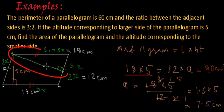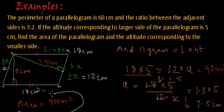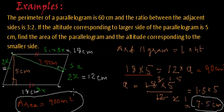So we have found both desired results: the altitude corresponding to the smaller side is 7.5 centimeters, and the area of the parallelogram is 90 centimeters squared.